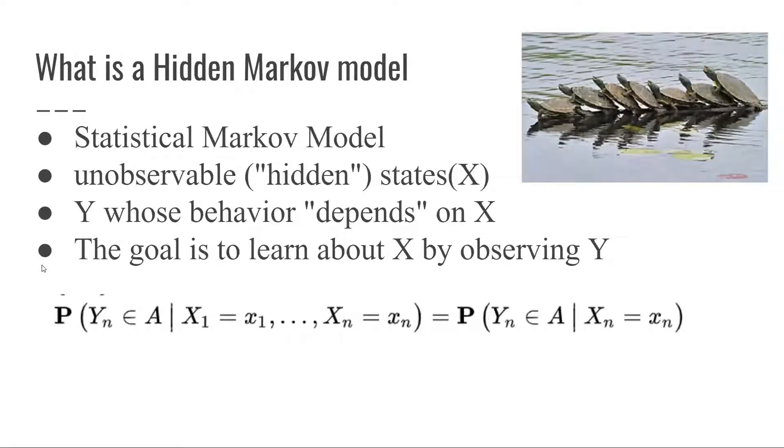So what is a hidden Markov model? A hidden Markov model is a statistical Markov model in which the system being modeled is assumed to be a Markov process, call it x, with an observable state. The hidden Markov model assumes that there's another process y whose behavior depends on x. And the goal is to learn about x by observing y. And here's a formula about the hidden Markov model.